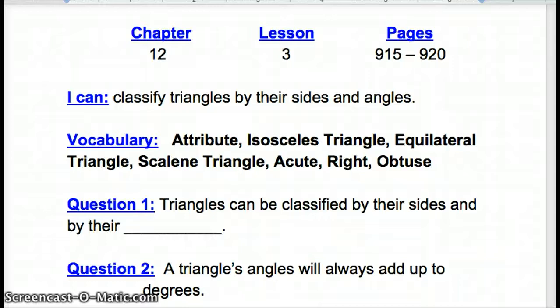Today's lesson is Chapter 12, Lesson 3, on pages 915 through 920. Our objective is I can classify triangles by their sides and angles. Vocabulary: attribute, isosceles triangle, equilateral triangle, scalene triangle, acute, right, and obtuse.